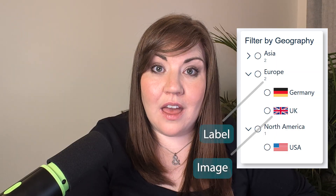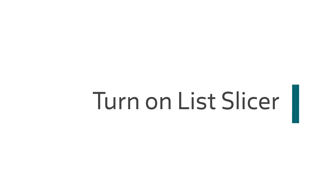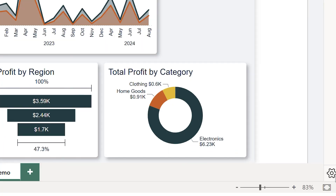Some of the new features include being able to add labels, images, and really granular level control of the look and feel of the slicer. Because this is new, if you don't see this icon, you're going to need to go to your settings, preview, and turn on the list slicer.